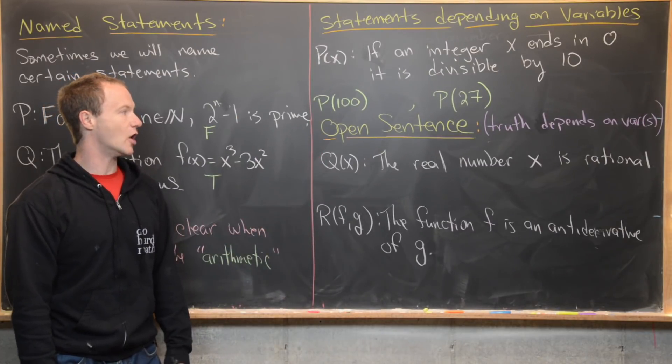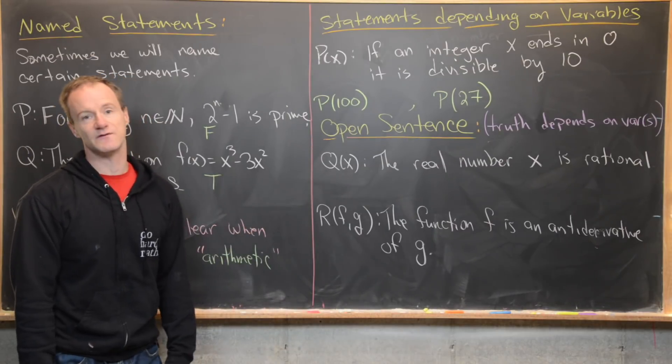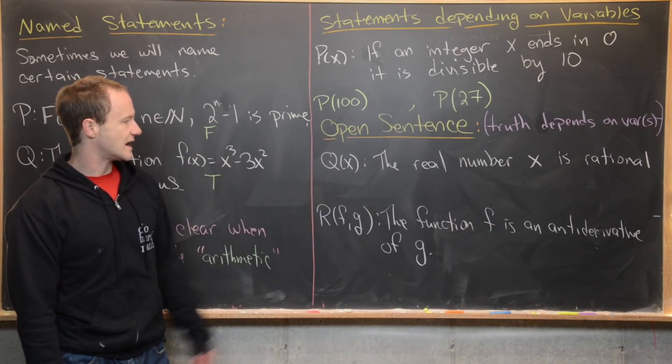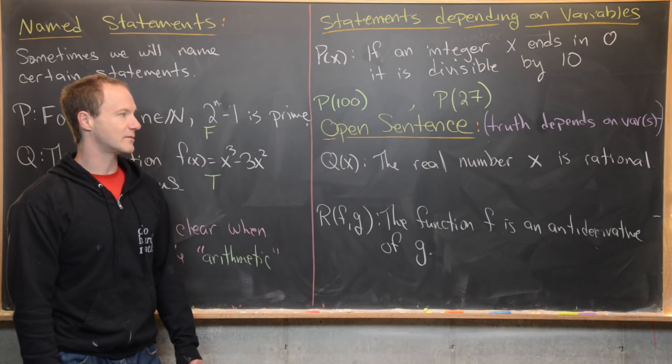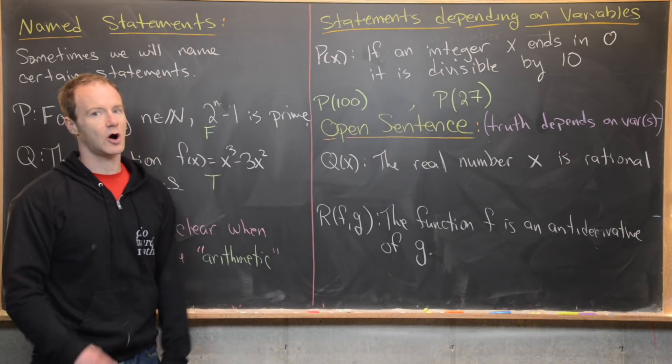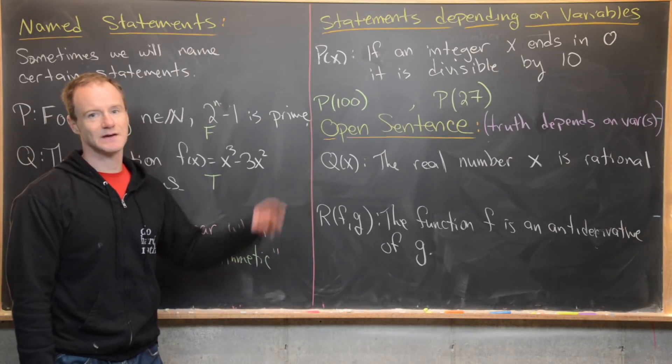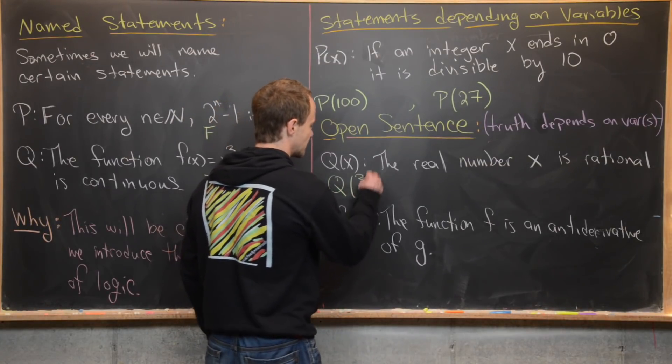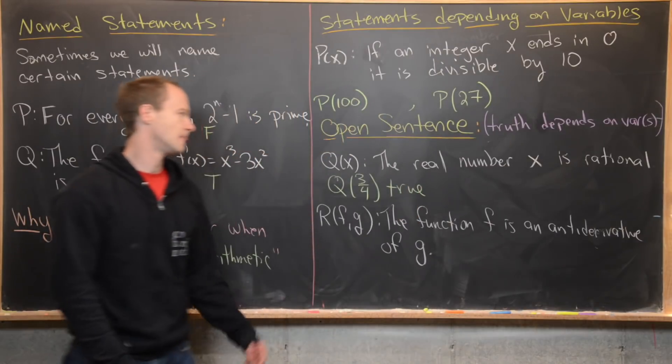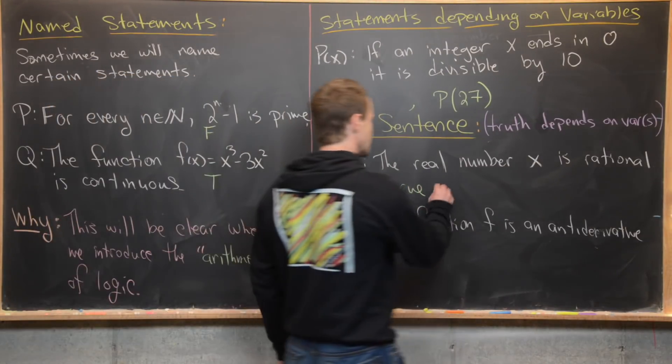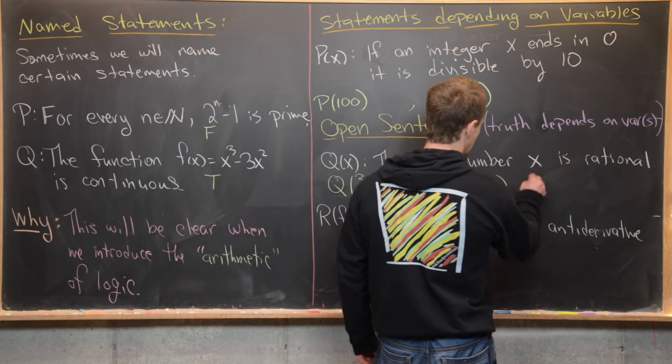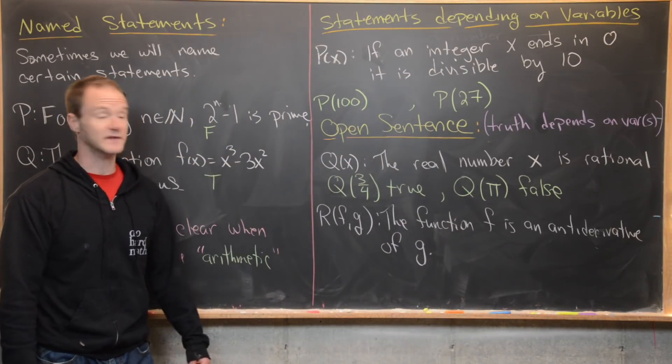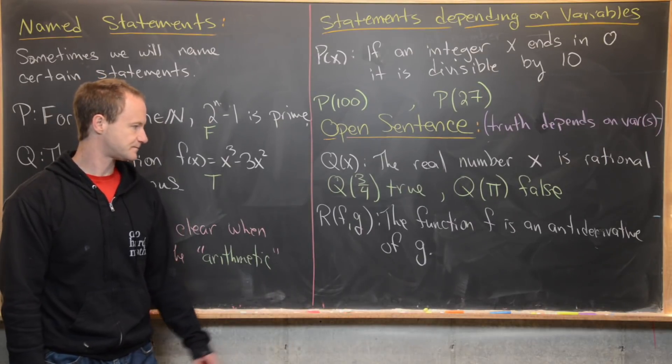This is versus an open sentence, where the truth depends on the variable or variables. You could have a multi-variable statement or open sentence. Like this one, Q of x says the real number x is rational. Obviously, all real numbers are not rational, so sometimes this will be true and sometimes this will be false. For instance, if we take Q of three quarters, that's most definitely true because three quarters is a rational number. But if we take Q of pi, that's going to be false because pi is an irrational number, or Q of the square root of three is also false.